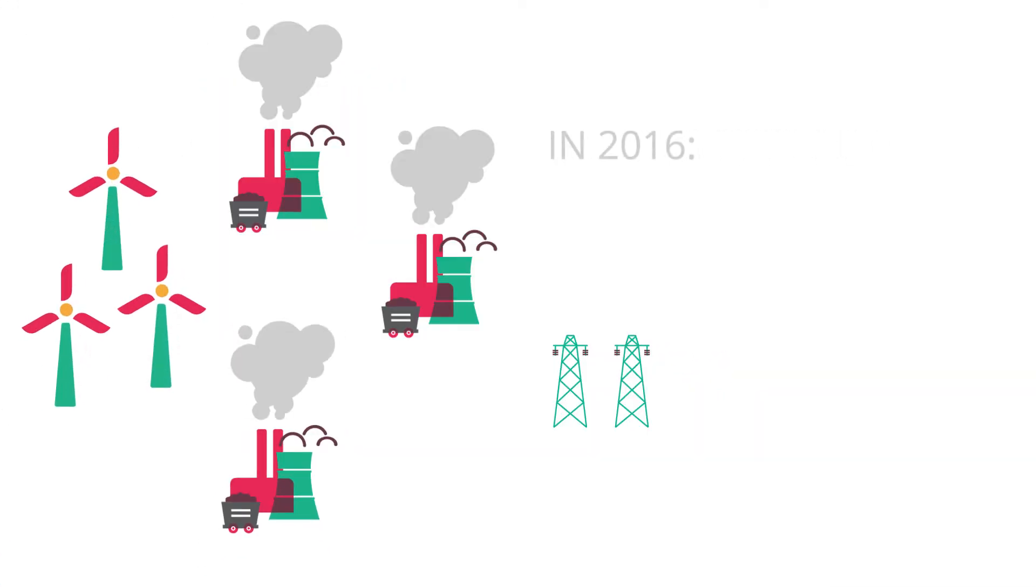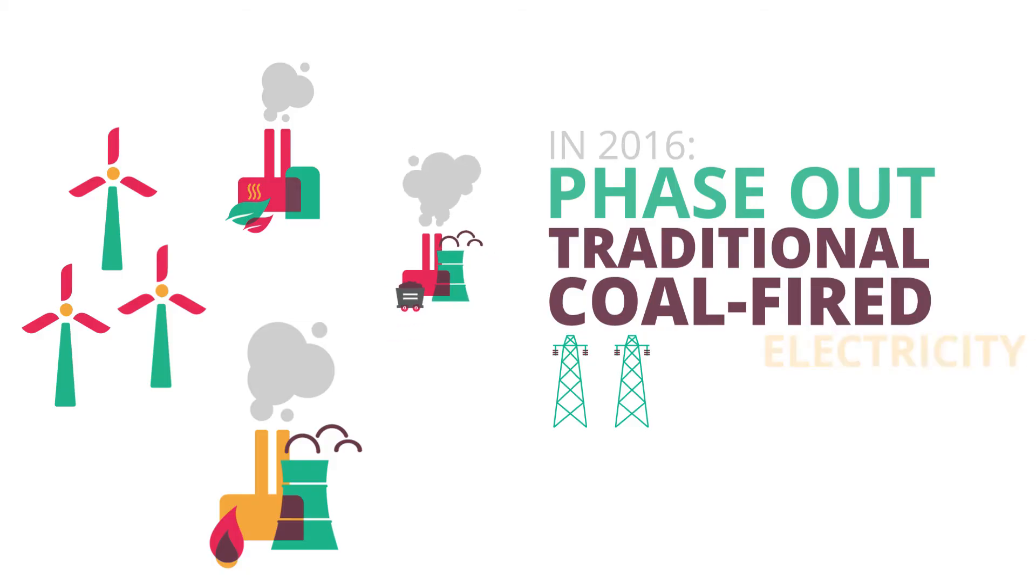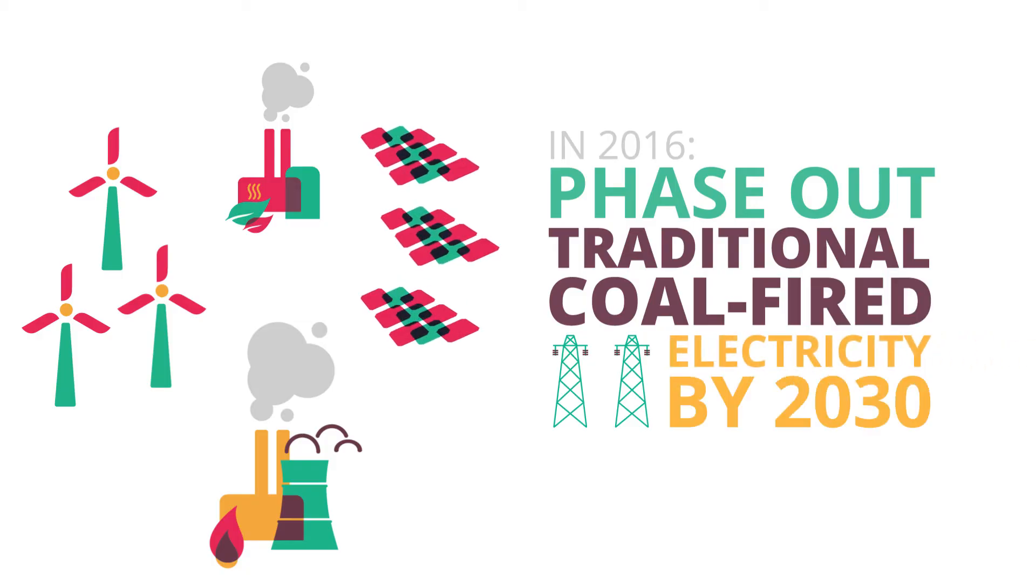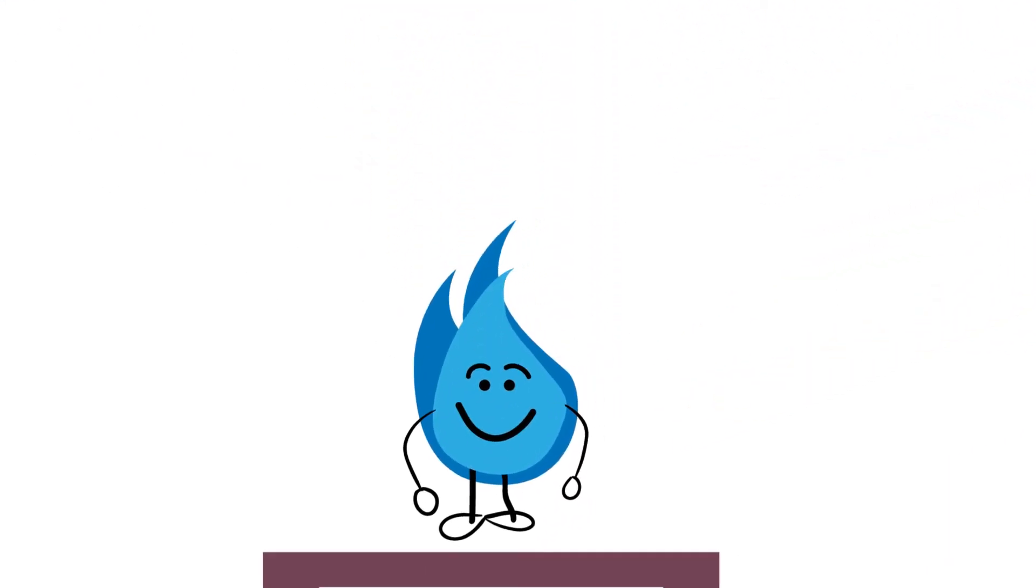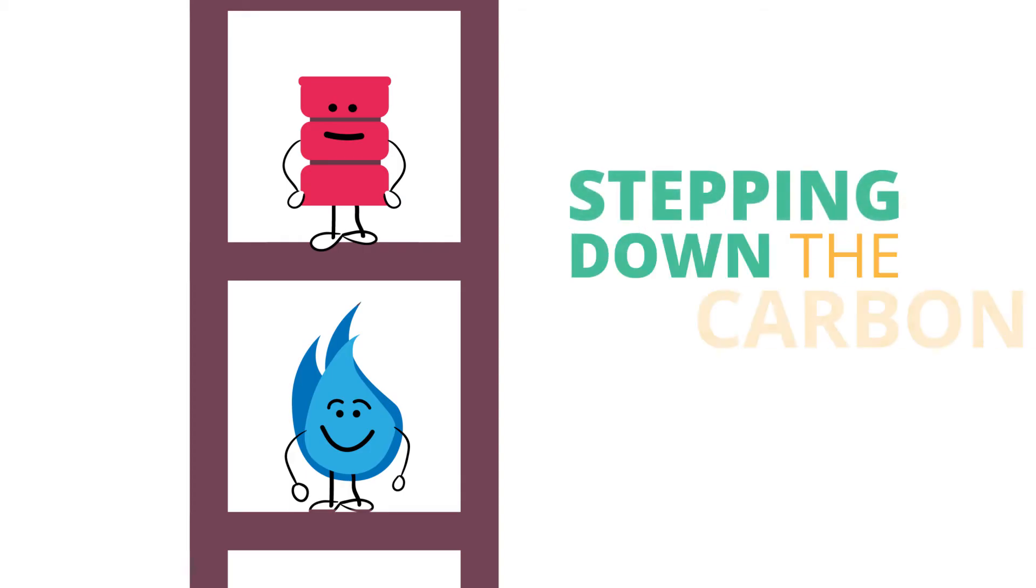In 2016, Canada committed to phase out traditional coal-fired electricity completely by 2030. Replacing a higher carbon energy source like coal with a lower carbon source like natural gas is sometimes referred to as stepping down the carbon ladder.